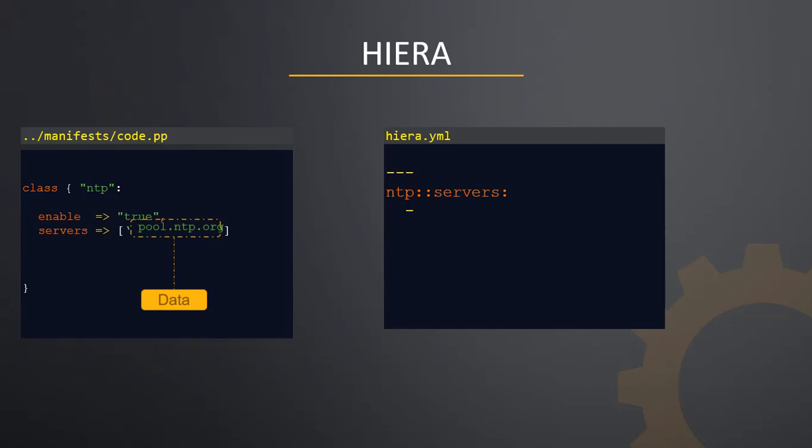Hiera allows us to move such data out of the code files into a separate file dedicated for storing data. Hiera is Puppet's built-in key-value configuration data lookup system. It allows for the separation of data from Puppet code. Puppet modules can look up information they need within Hiera, allowing Puppet code to run specific configurations on specific nodes. We no longer have to cater for different configurations in our modules, which makes them run quickly and keeps our code precise and clear.